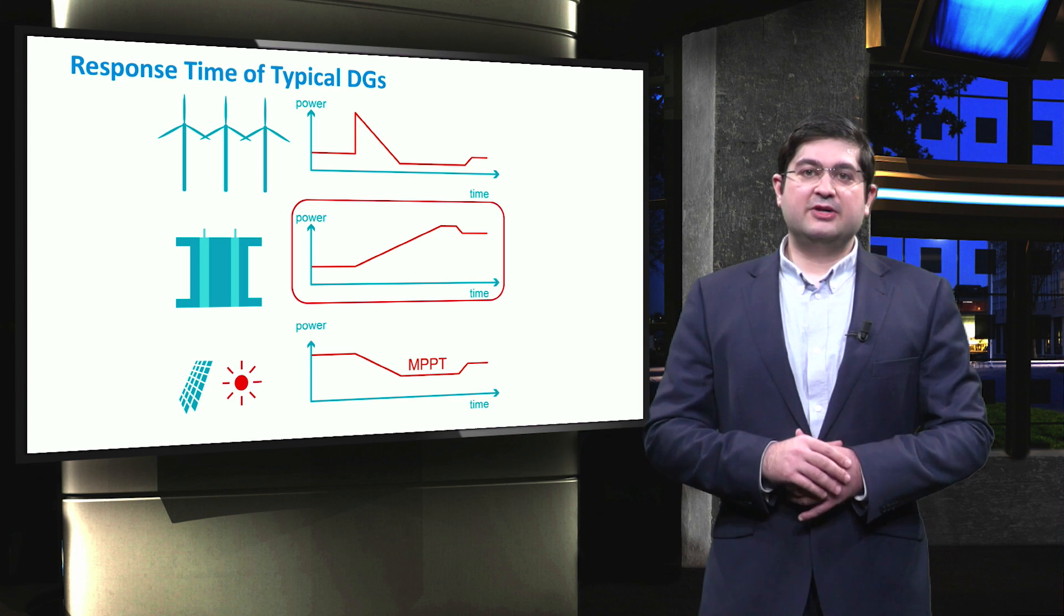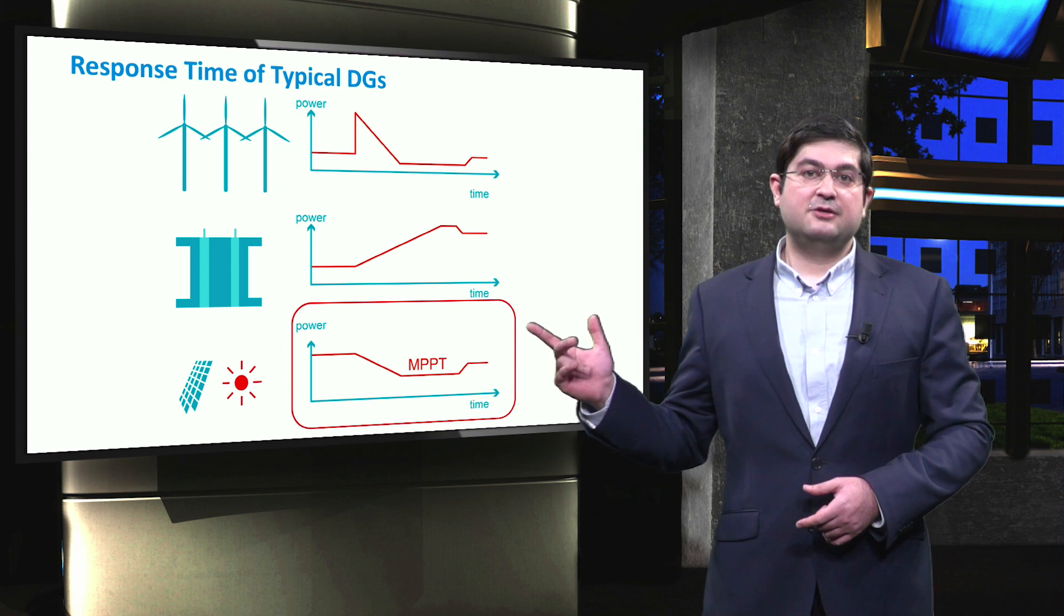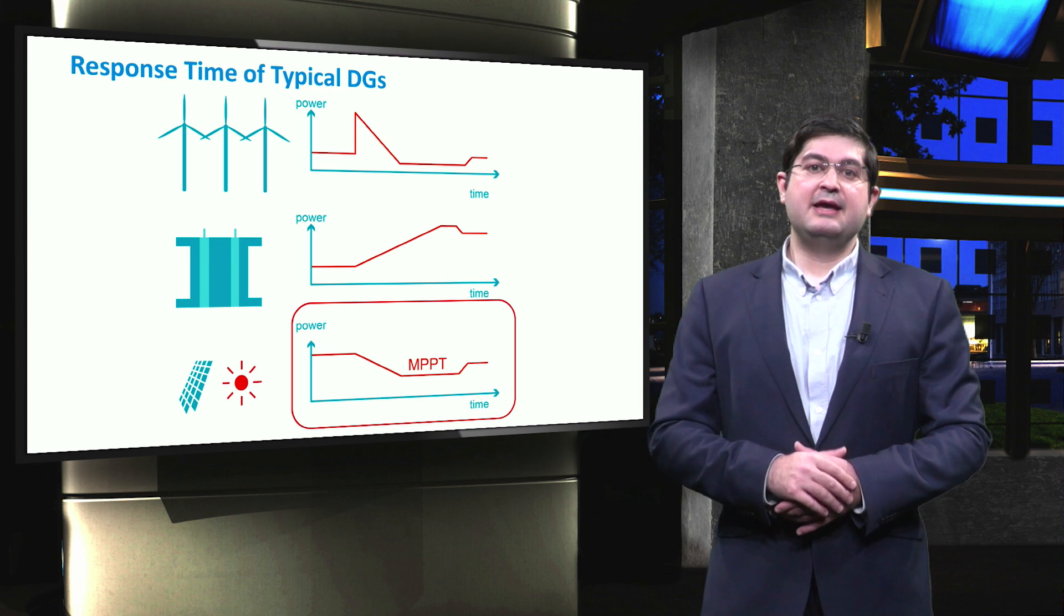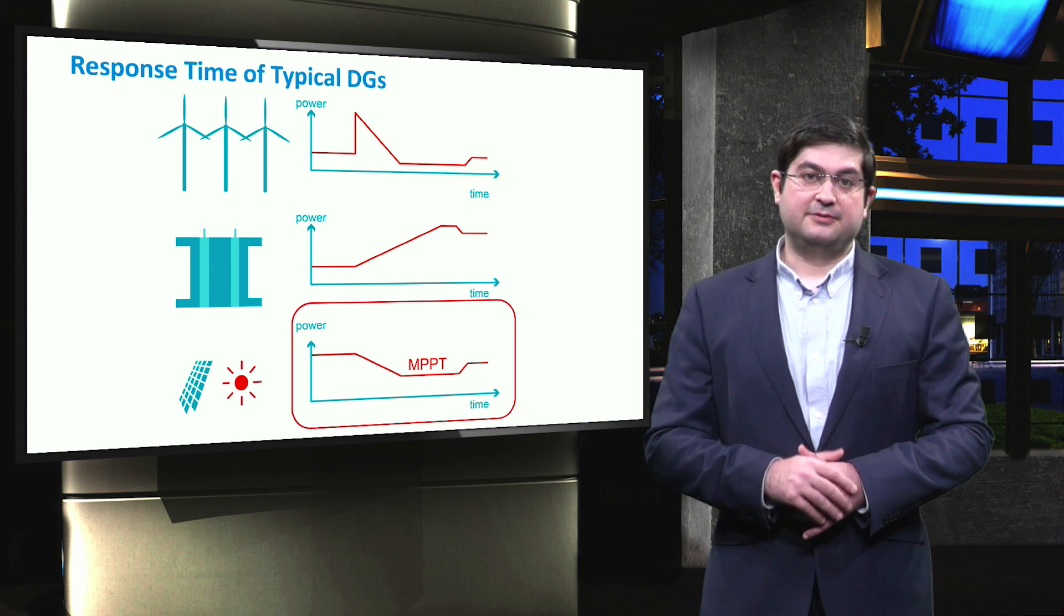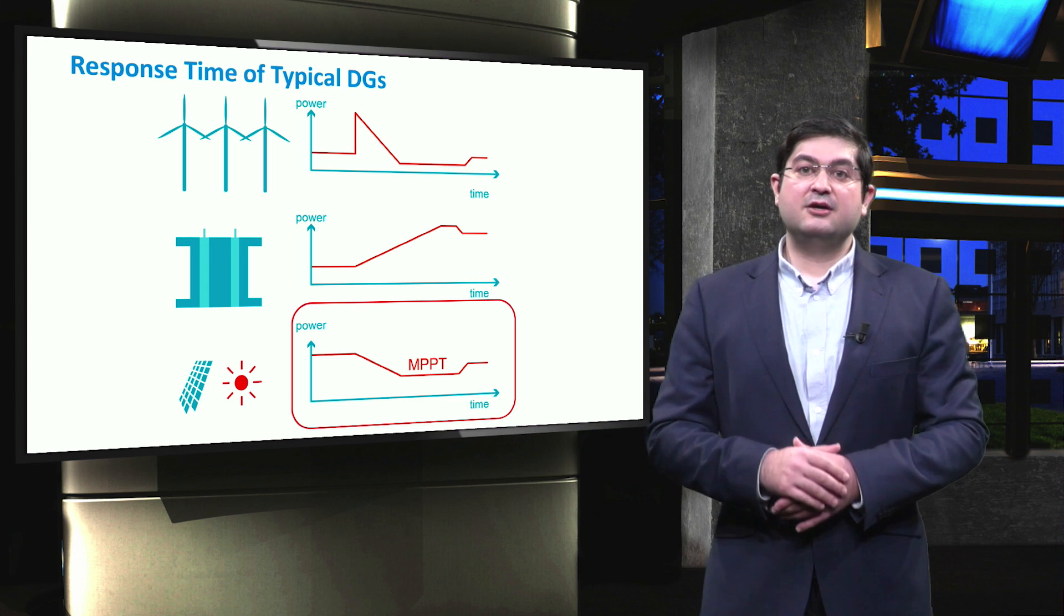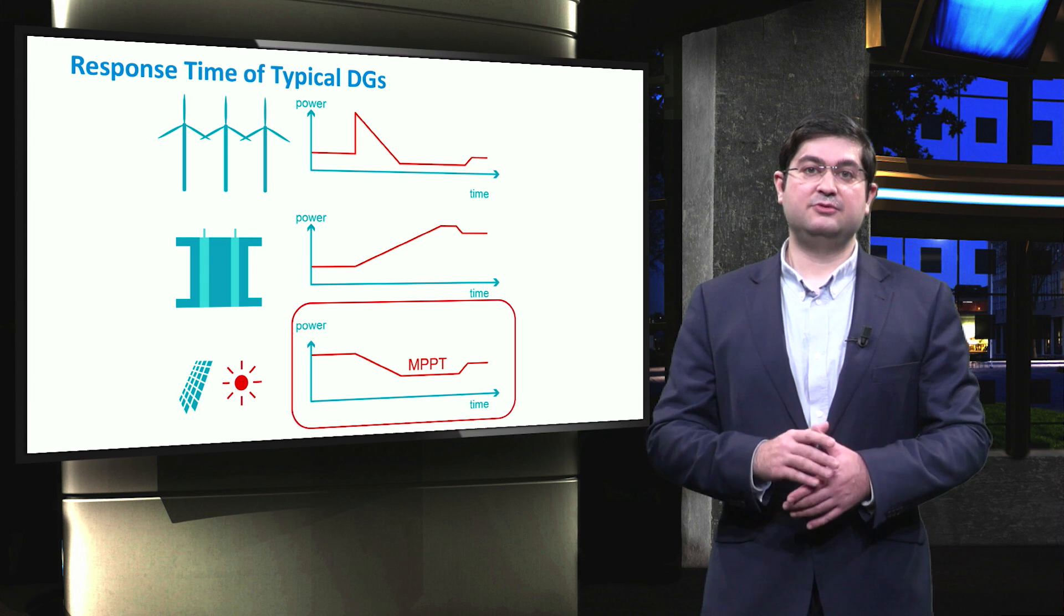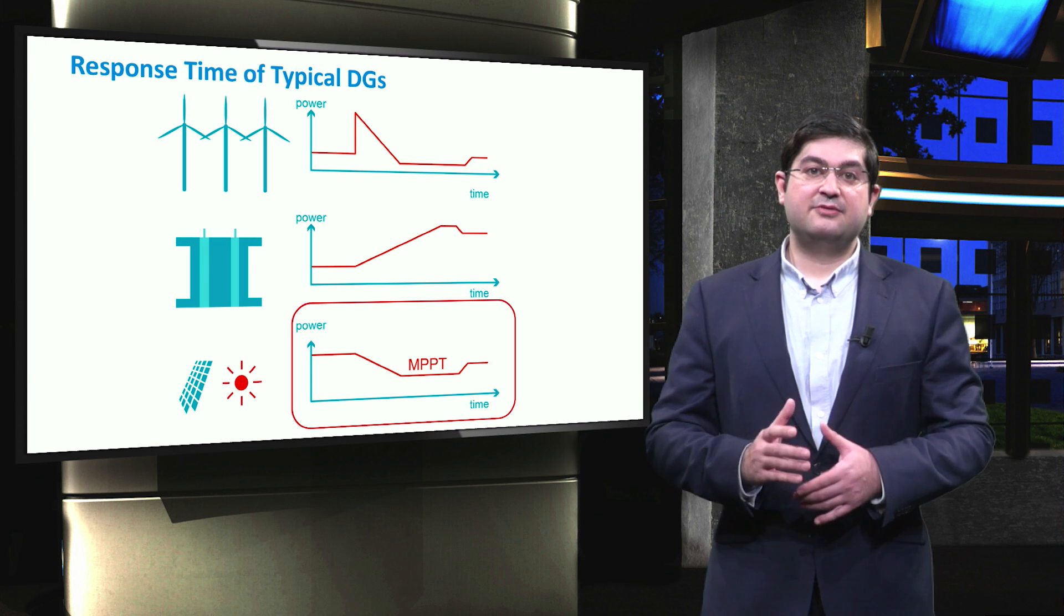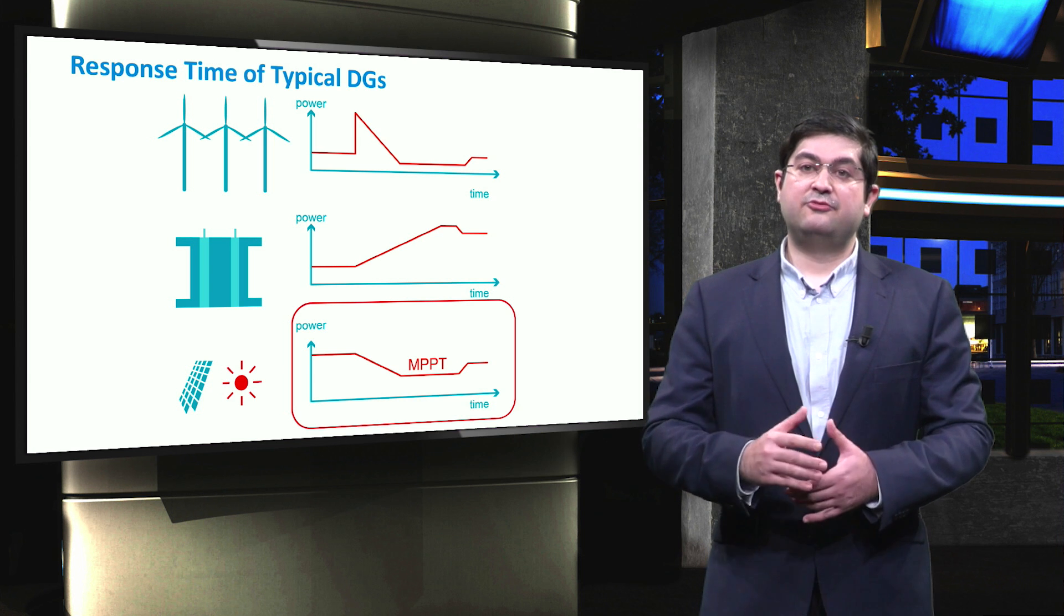Then, what about PV solar units? In fact, they are typically operated at their maximum power point, at which obviously they are not able to increase their active power. Therefore, photovoltaic solar units cannot be used to fully support the frequency, particularly during the moments where an increase in power generation by PV solar units is needed for frequency control.